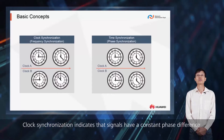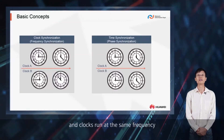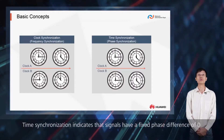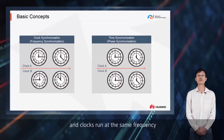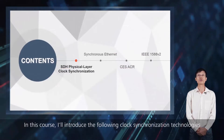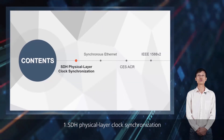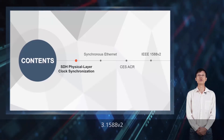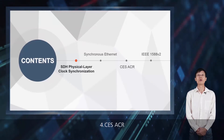Clock synchronization indicates that signals have a constant phase difference and clocks run at the same frequency. Time synchronization indicates that signals have a fixed phase difference of zero and clocks run at the same frequency. In this course, I'll introduce the following clock synchronization technologies: 1. SDH physical layer clock synchronization, 2. Synchronous Ethernet, 3. 1588 version 2, 4. CES-ACR.